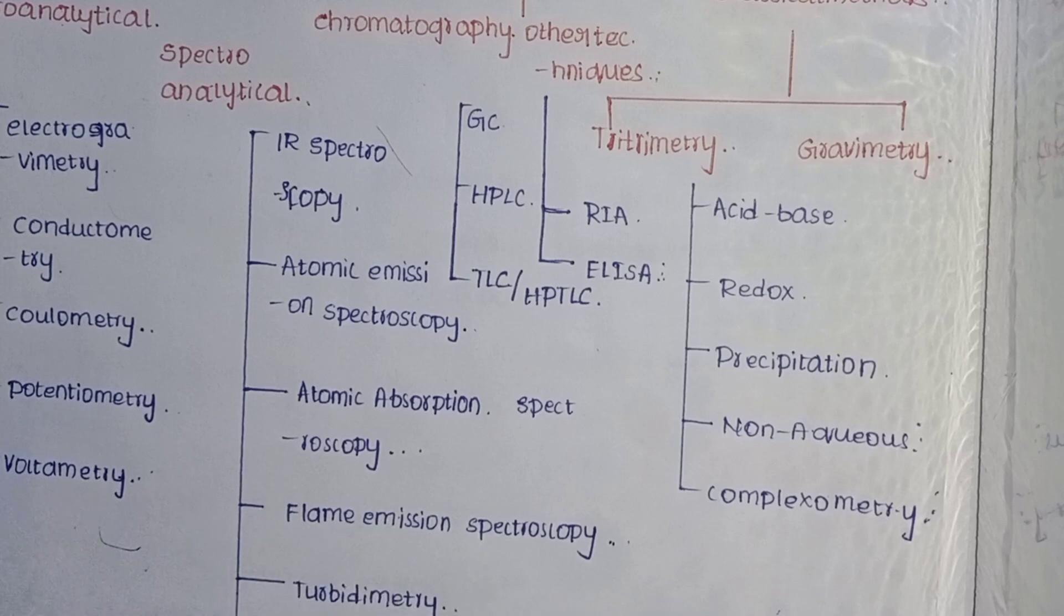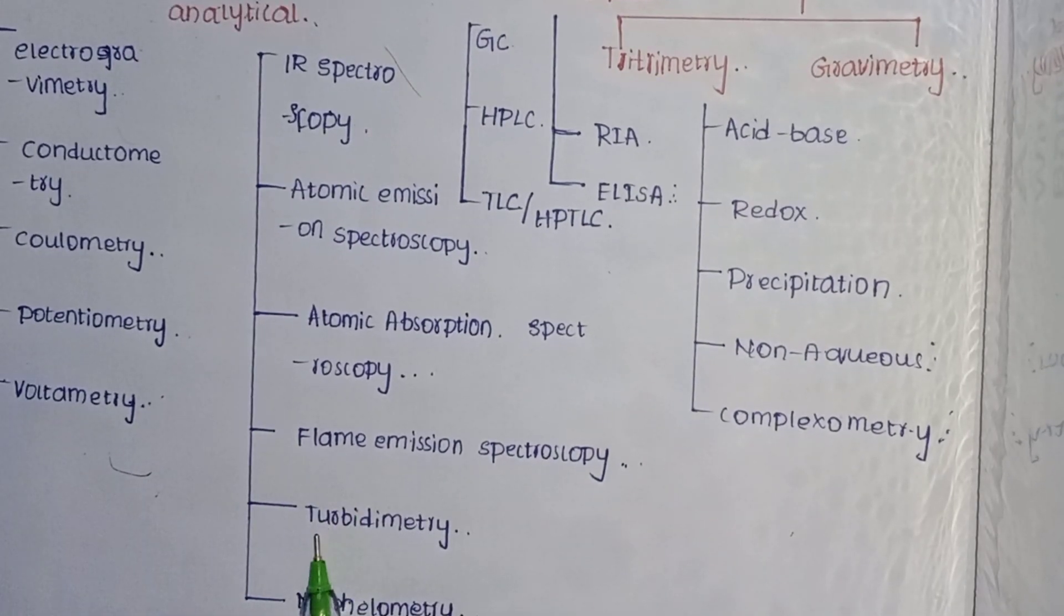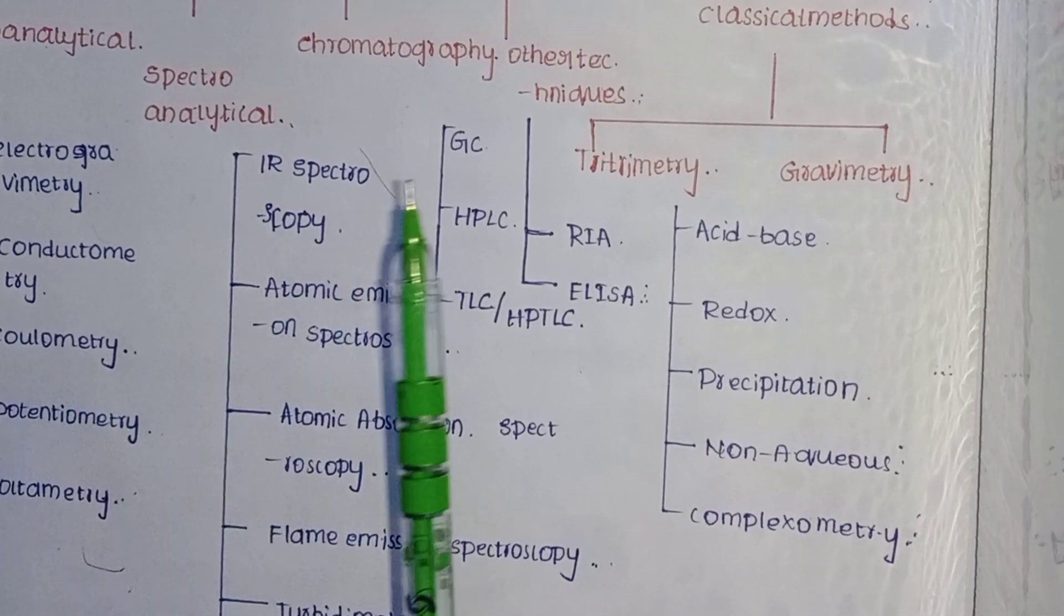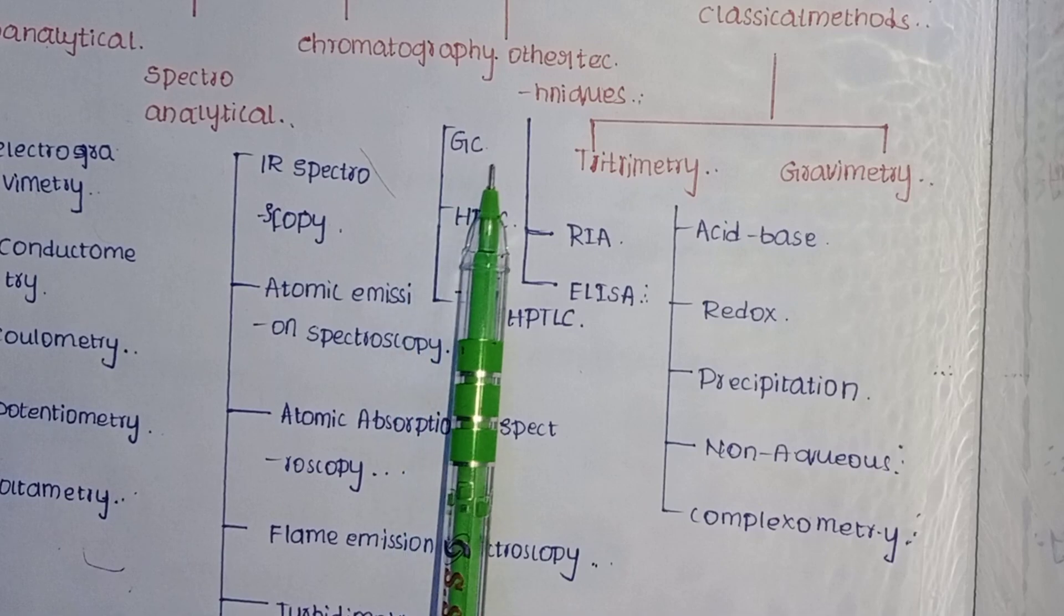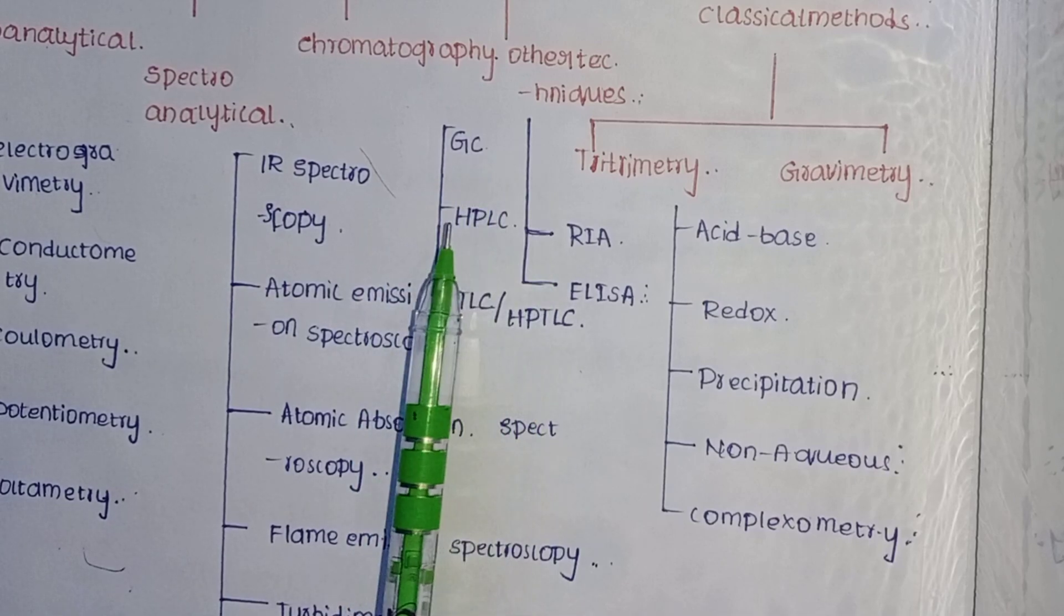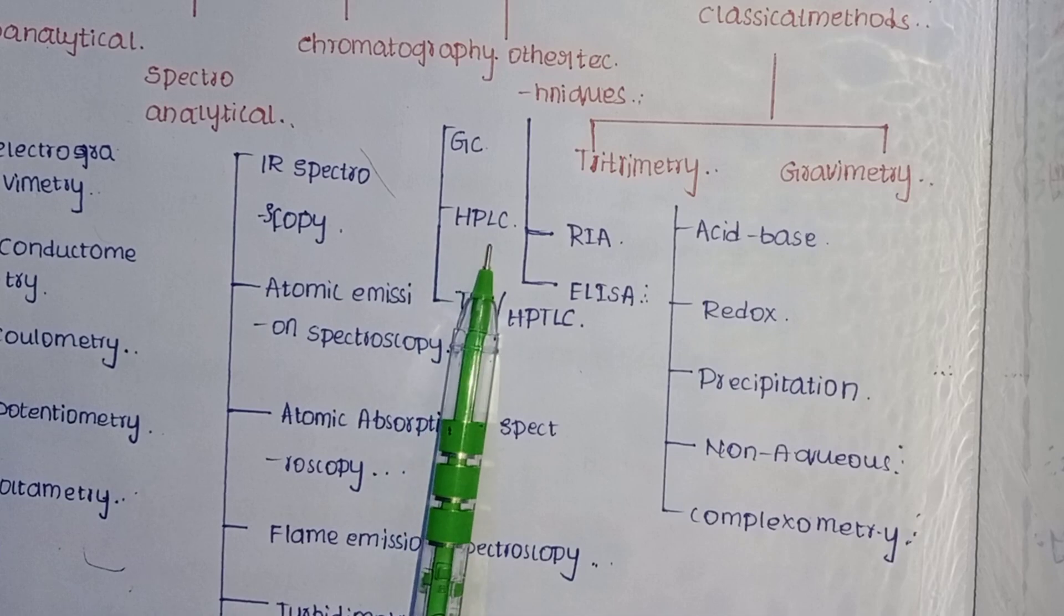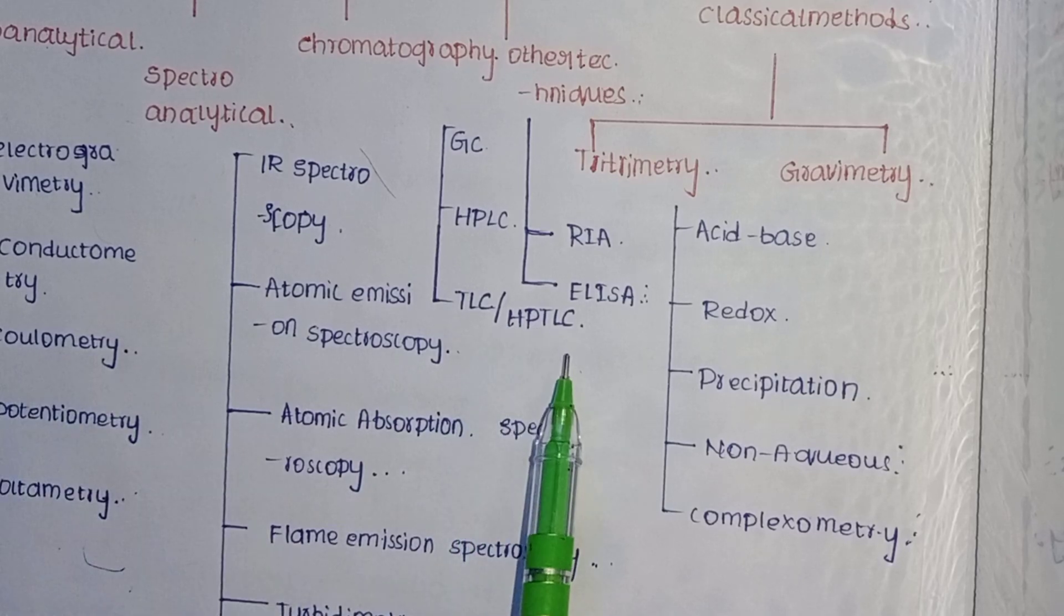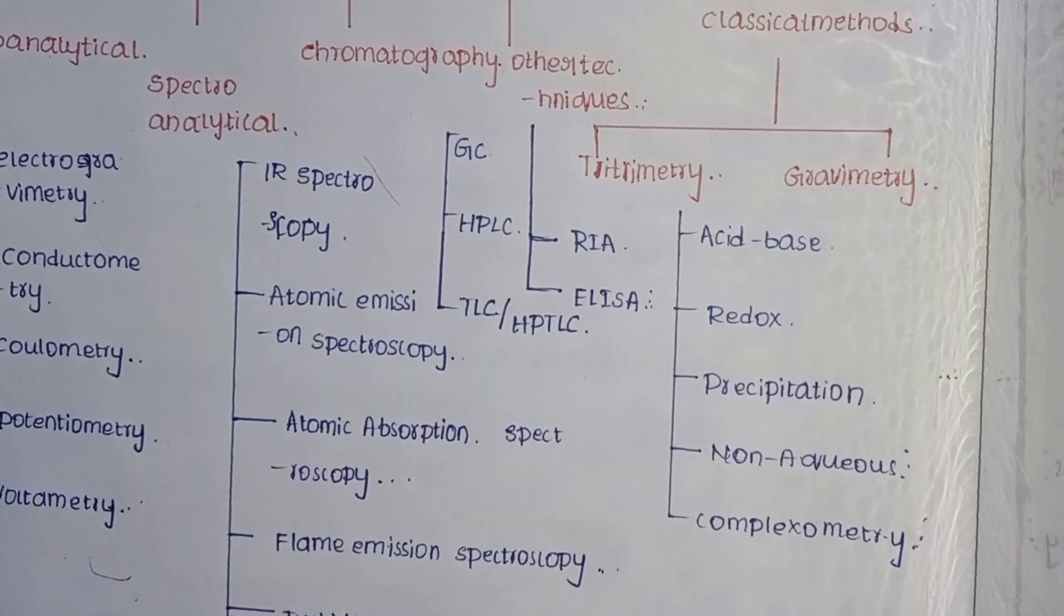Flame emission spectroscopy, turbidimetry, and nephelometry are also spectroanalytical methods. Chromatography is divided into GC (gas chromatography), HPLC (high performance liquid chromatography), TLC (thin layer chromatography), and HPTLC (high performance thin layer chromatography).